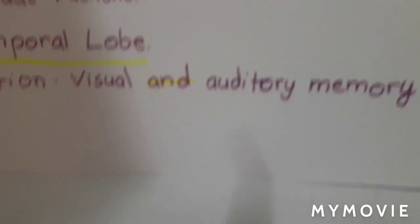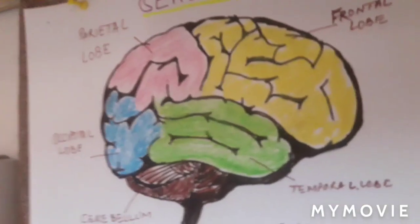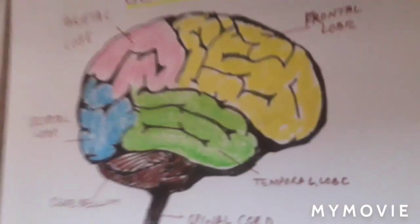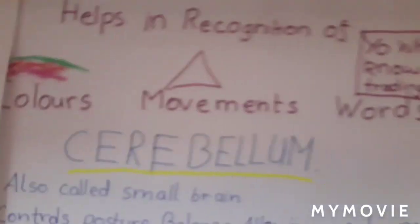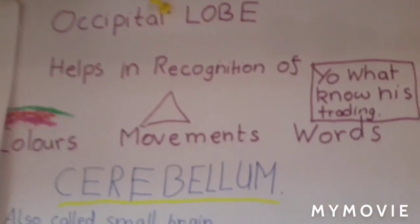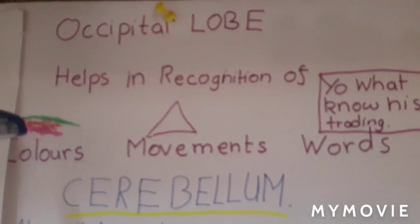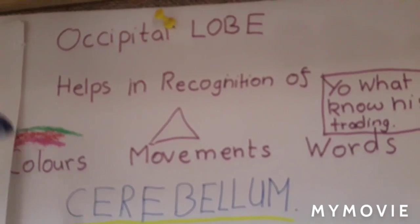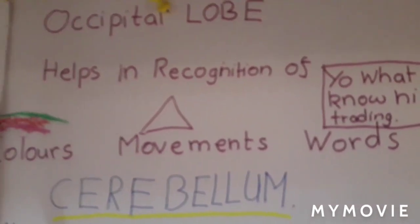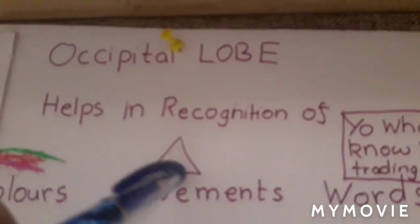The last and fourth lobe is the occipital lobe. The occipital lobe helps in the recognition of colors — for example, green, red, and purple — as well as movements, like seeing my pen moving, and words.